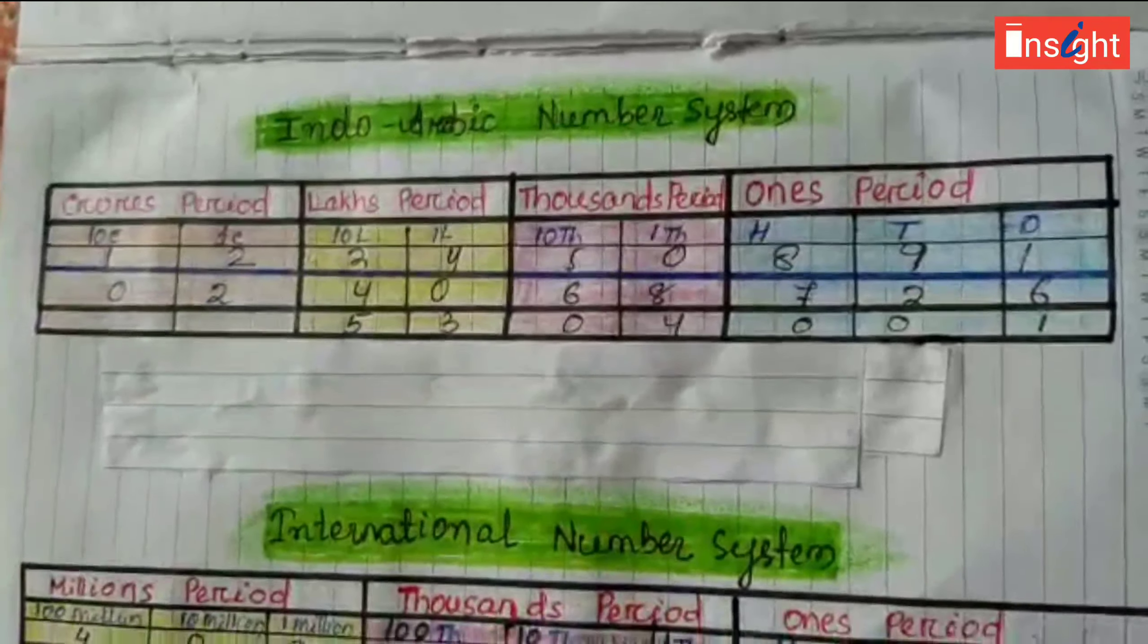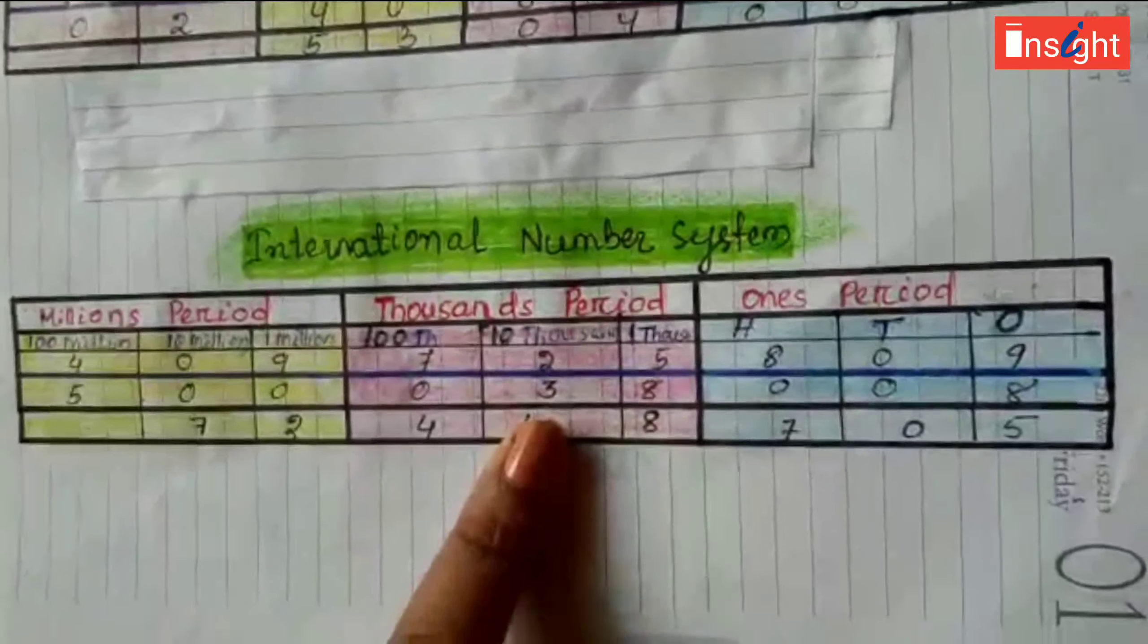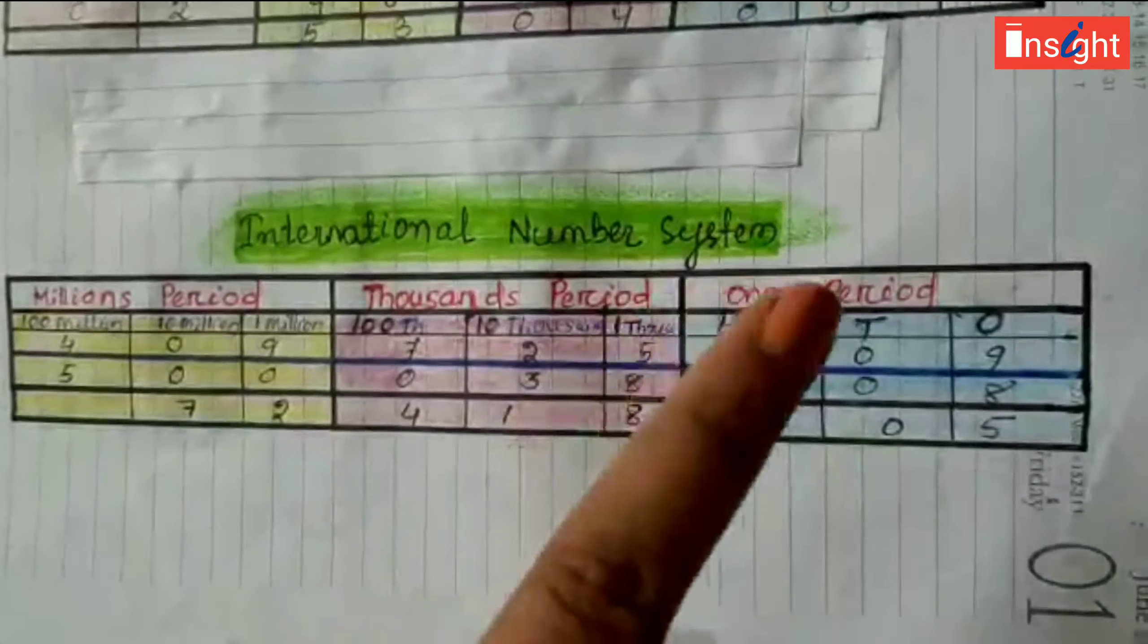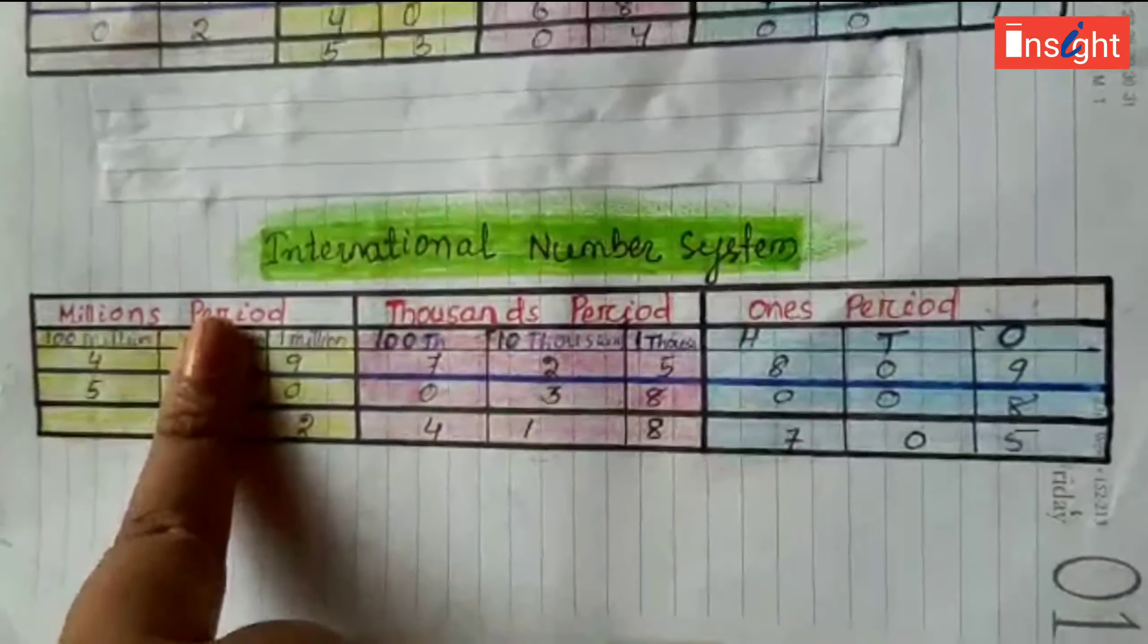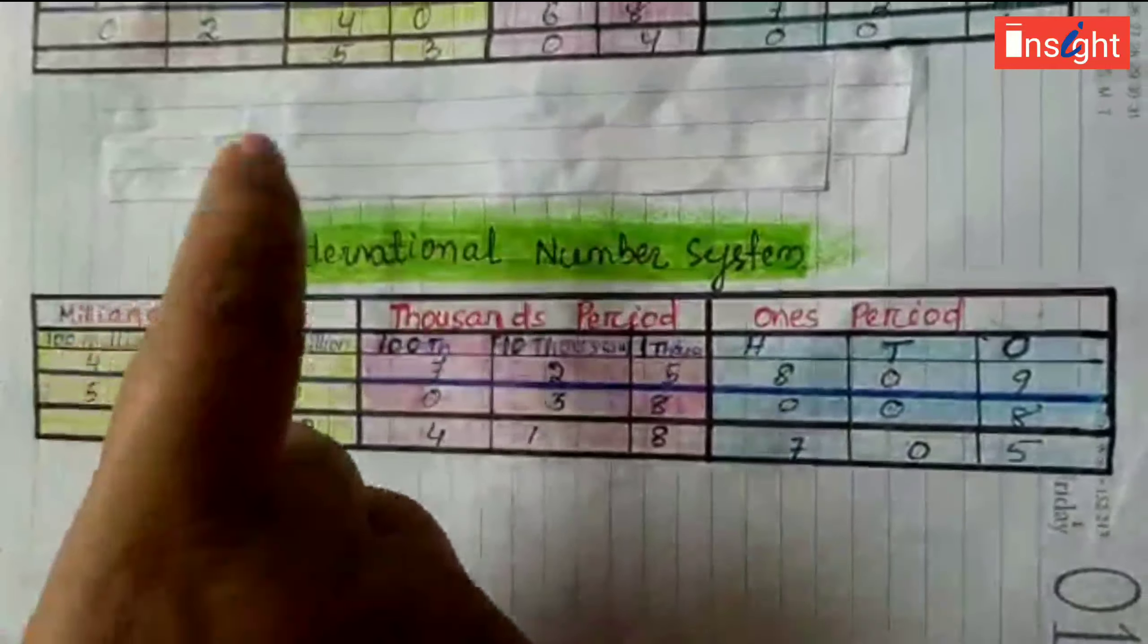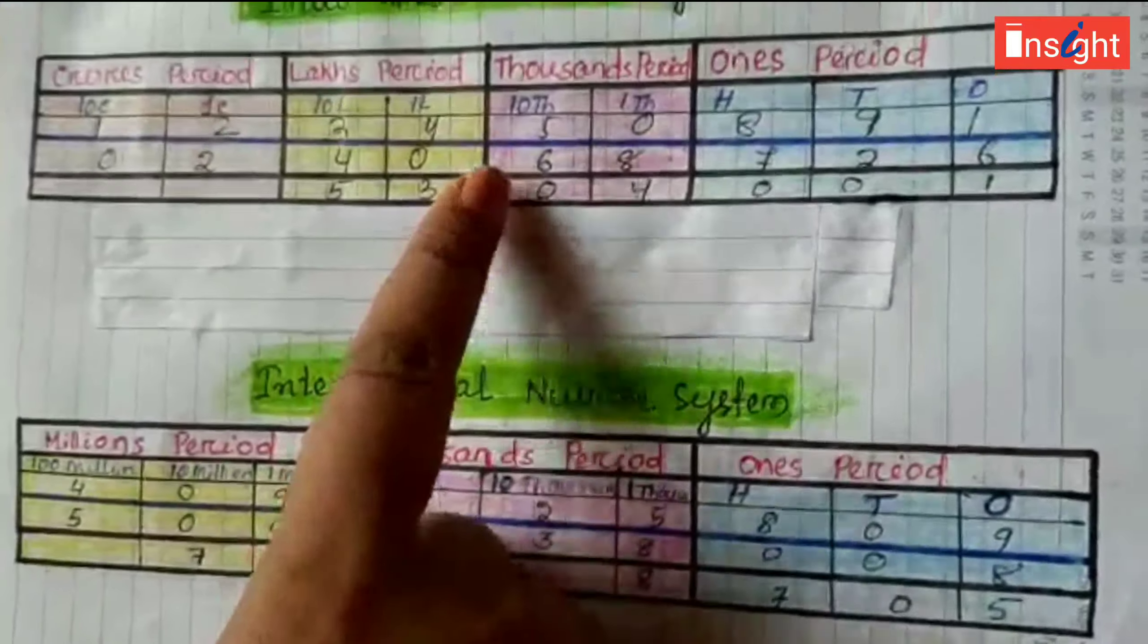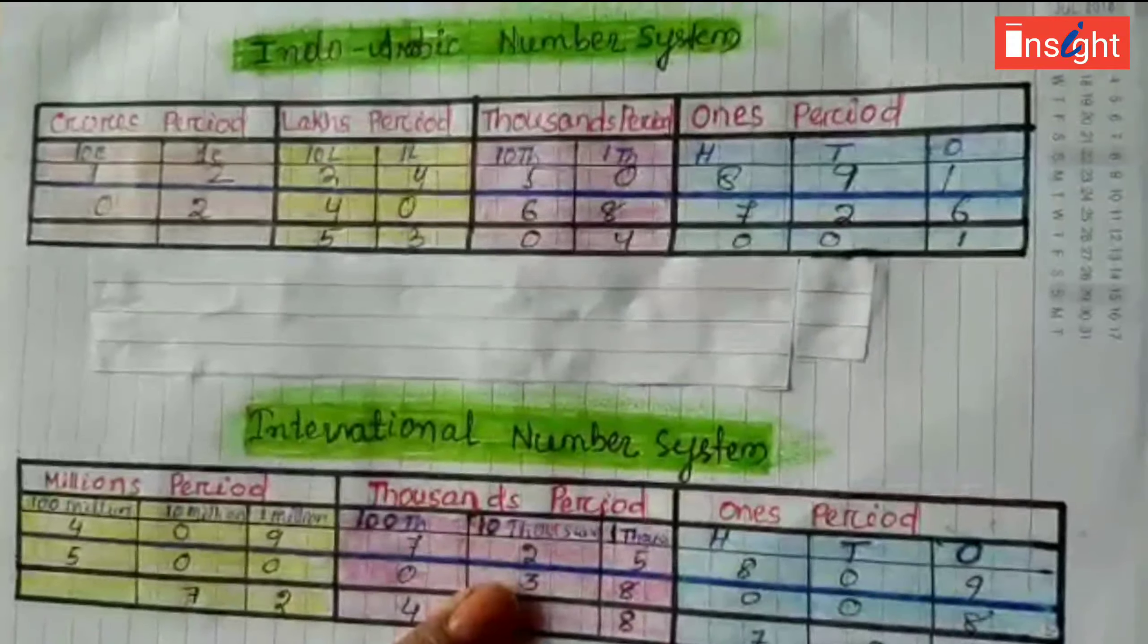Come to International number system. It is divided into three categories: once period, thousand period, millions period. There are four categories in Arabic number system. There are three categories in International number system.